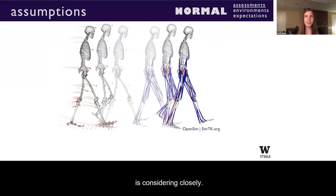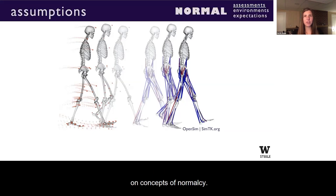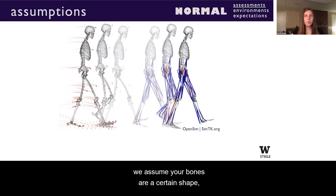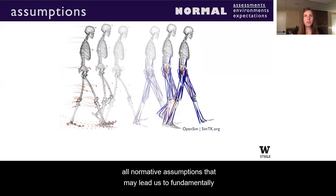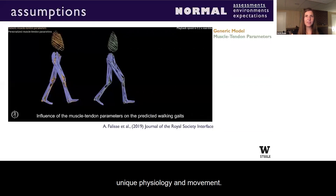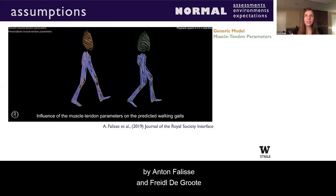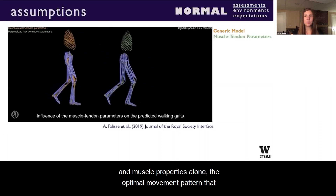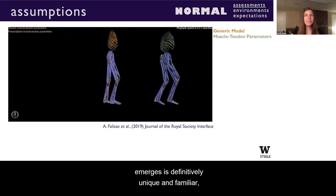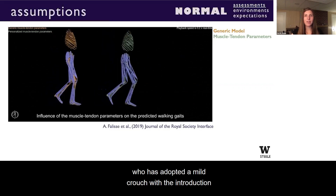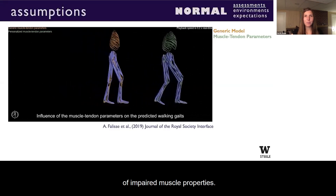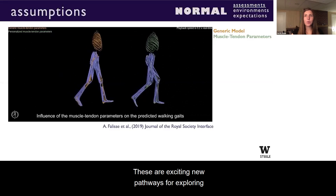GDI is just one example our team is considering closely. Even our fundamental models are based deeply on concepts of normalcy. When we evaluate kinematics, kinetics, or generate musculoskeletal simulations, we assume your bones are a certain shape, your joints move a certain way, and that your muscles activate in certain patterns to optimize an objective function — all normative assumptions that may lead us to fundamentally misinterpret or misguide how we evaluate an individual's unique physiology and movement. Research by Anton Felice and Friedel de Groot has shown that when you model an individual's unique morphology and muscle properties, the optimal movement pattern that emerges is definitively unique, such as a model adopting a mild crouch with impaired muscle properties.